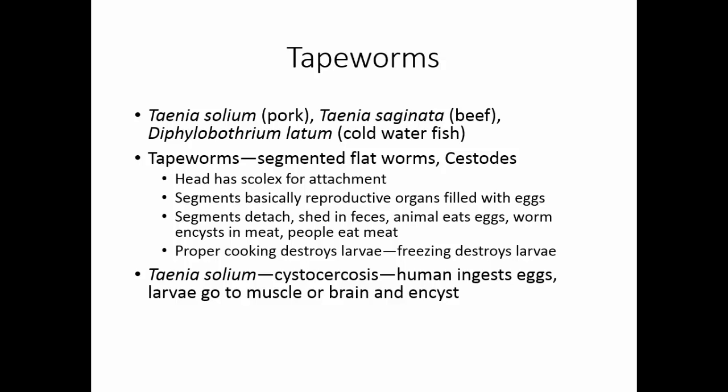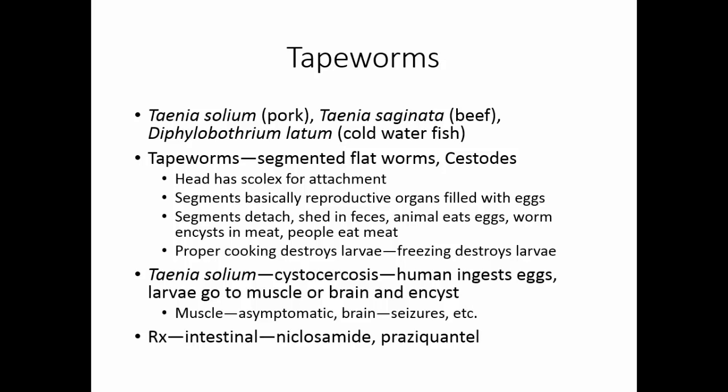Taenia solium can also cause cysticercosis, where humans accidentally ingest the eggs rather than larvae. The eggs hatch in the human and travel to muscle or brain where they encyst. Those encysting in muscle are usually asymptomatic with perhaps mild muscle pain, but those that go to the brain cause damage resulting in seizures and other neurological problems. Treatment for intestinal tapeworms includes niclosamide and praziquantel, which destroy the tapeworm scolex, allowing the tapeworm to be shed from the body.